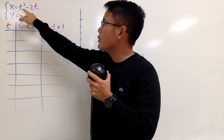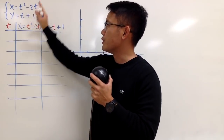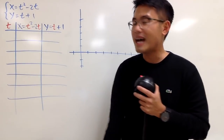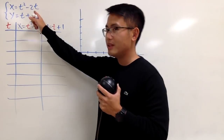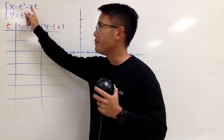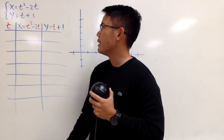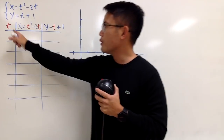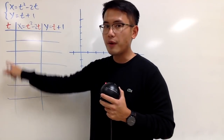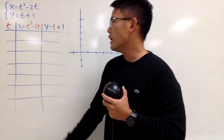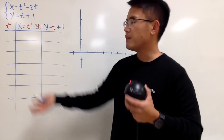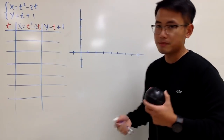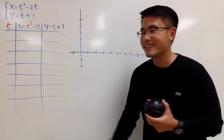We have x is equal to t squared minus 2t, and y is equal to t plus 1. Notice that we have the new independent variable, namely t. So when we set up our table, we are going to choose the t values, and then based on those t values, we are going to figure out the x and the y, and then plot the points.